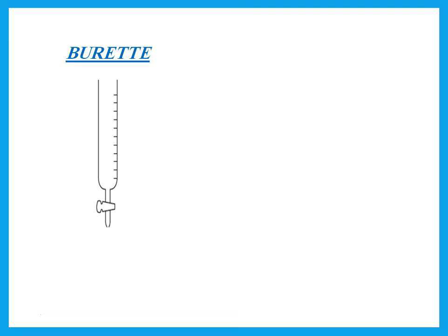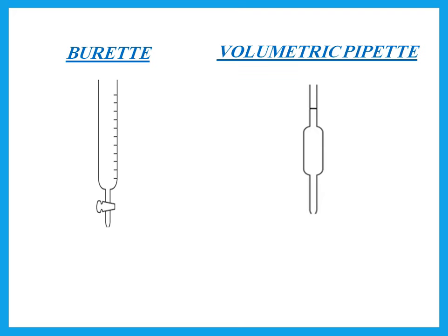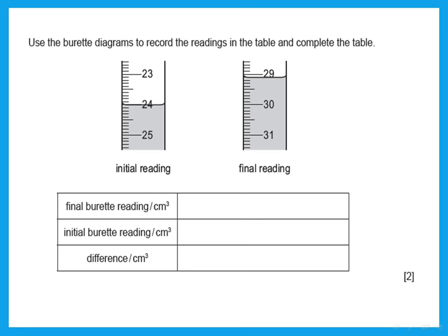This is a burette — very accurate and used to measure any volume across a wide range. This is called a volumetric pipette. It's accurate, but it measures only specific volumes. These are burette readings. You should remember that the burette has zero at the top, and the readings increase going down.